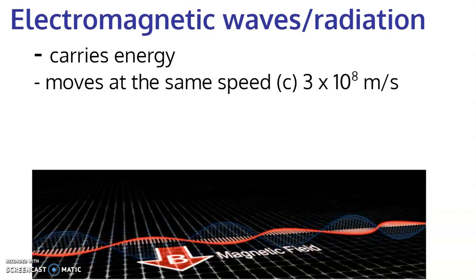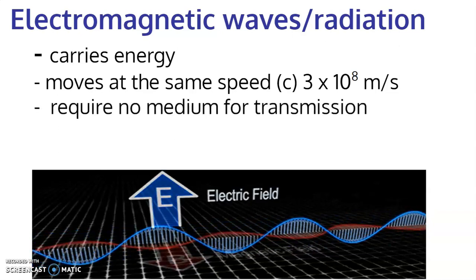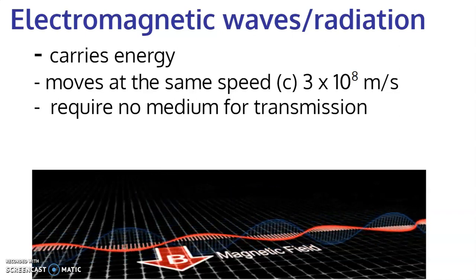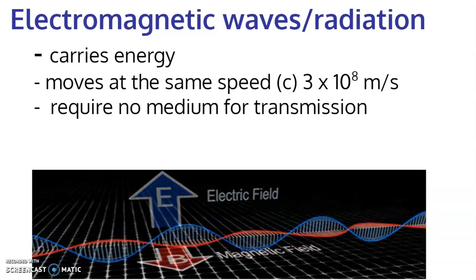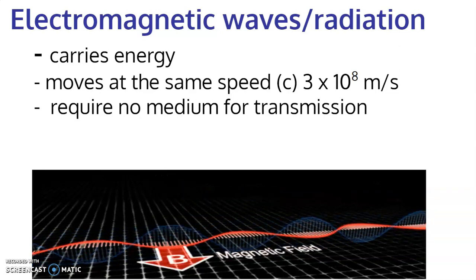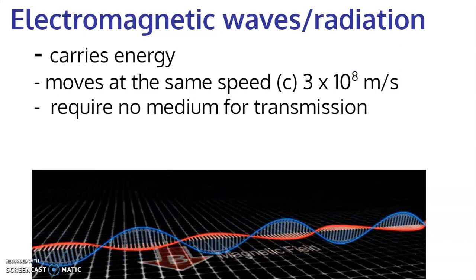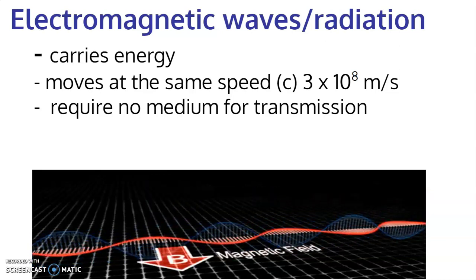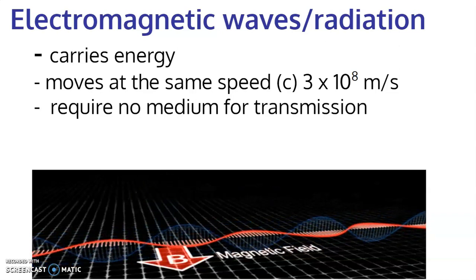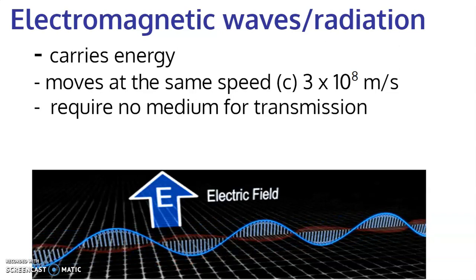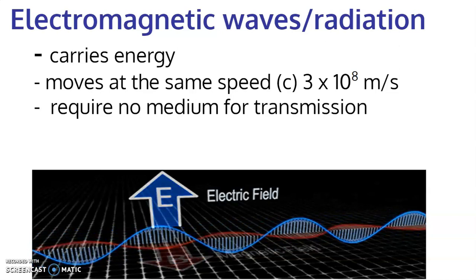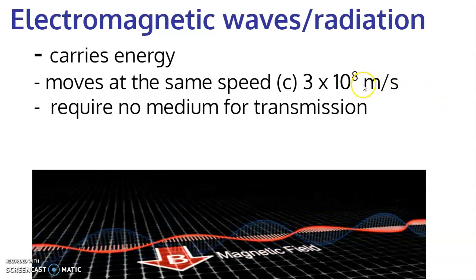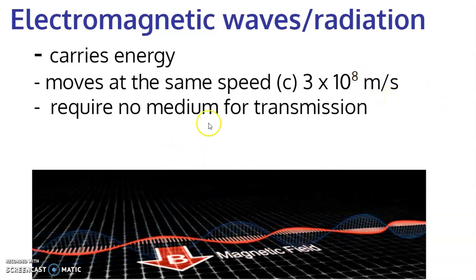All electromagnetic waves carry energy and move at the same speed — whether you're talking about radio waves or gamma rays. Importantly, they don't require a medium for transmission. Sound can only travel because there is air between you and the source. Light doesn't need a medium; it can travel through the vacuum of space, whereas sound cannot. That's why sunlight and infrared rays actually reach us.